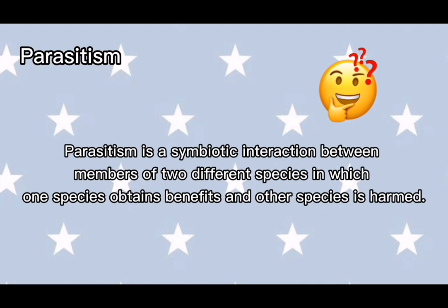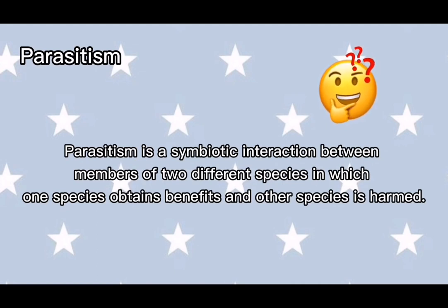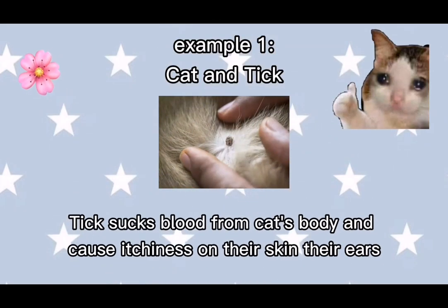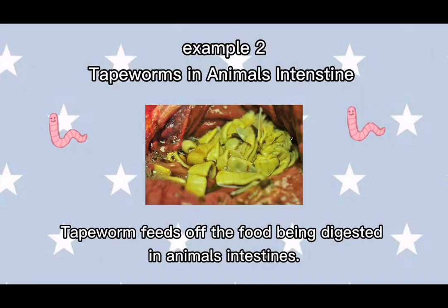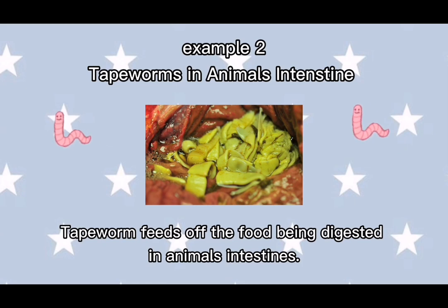Parasitism is a symbiotic interaction between members of two different species in which one species obtains benefit and the other species is harmed. Example 1 — Cats and Ticks: ticks take out blood from cats' bodies and cause itchiness on their skin and ears. Example 2 — Tapeworms and Animal Intestines: tapeworms feed off the food being digested in an animal's intestines.